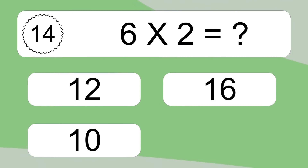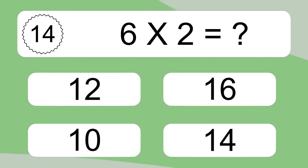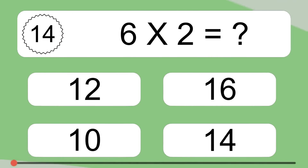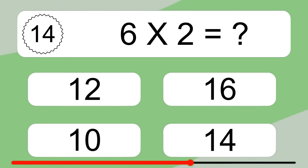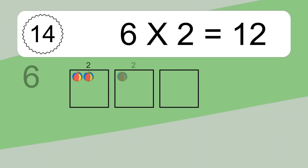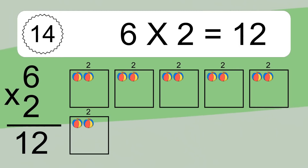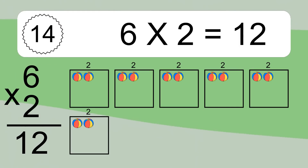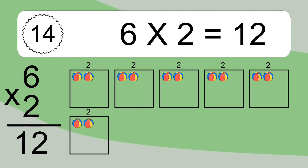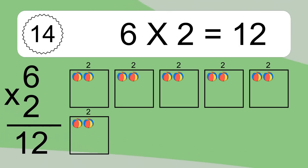6 times 2 equals what? 6 times 2 equals 12. We have 6 boxes and each box has 2 colorful balls inside. If you count all the balls in all the boxes together, you will have 6 times 2 balls. This equals 12 balls.